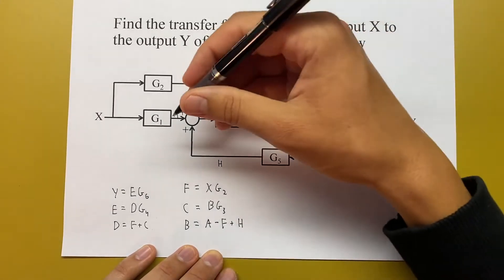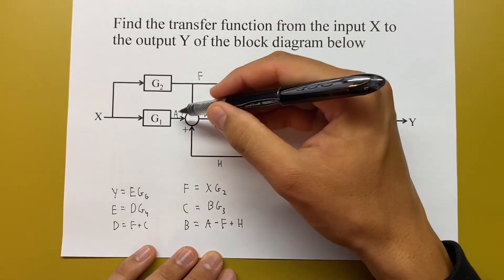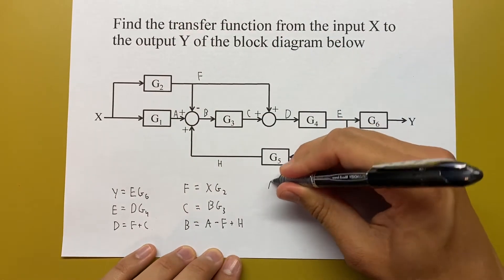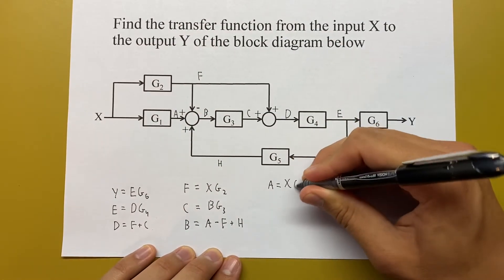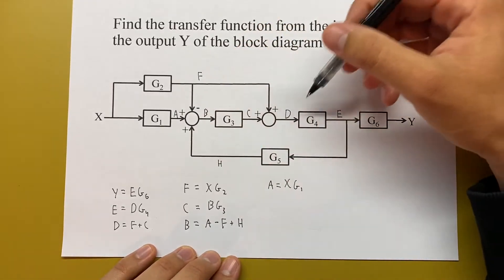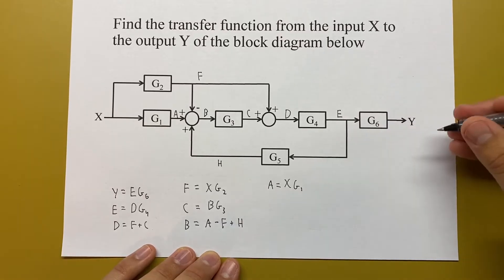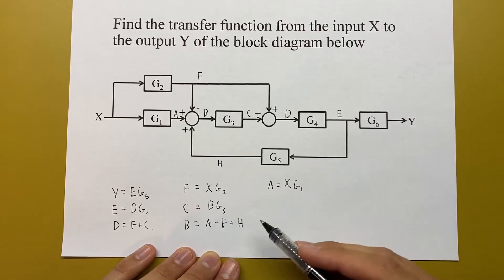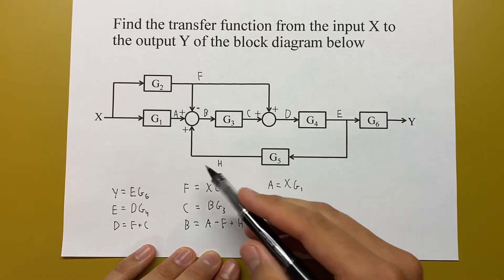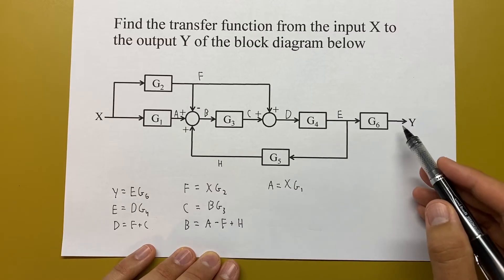Then we have to solve for A and H. Let's start with A. A is going to be X times G1. And then H is a little different. All these other ones we solved are in the feedforward direction, going to the right. But this H is coming from the left. So instead of working backwards to solve from X, we're going to work forwards and end up solving in terms of Y.